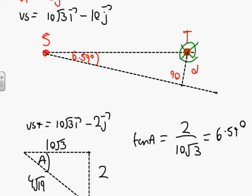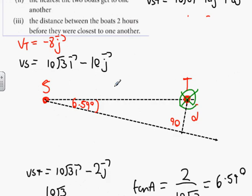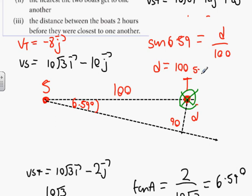Can anybody tell me what the length ST is? 100 kilometers. Can anybody tell me how to find D? D is the opposite side, 100 is the hypotenuse. Sin 6.59 equals D over 100, so D equals 100 sin 6.59, which gives us 11.48 kilometers.